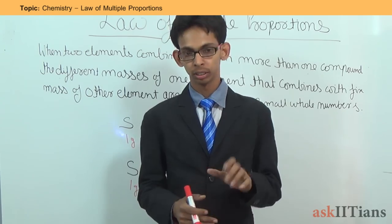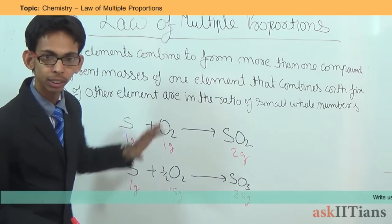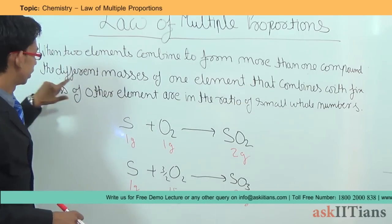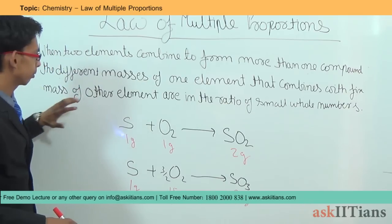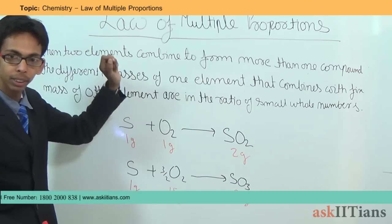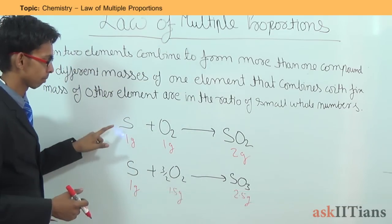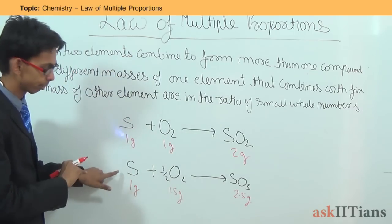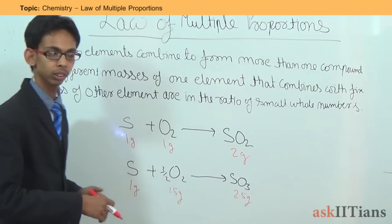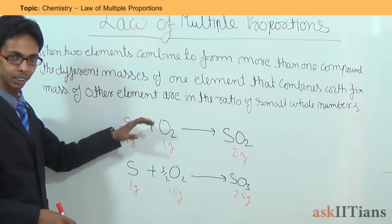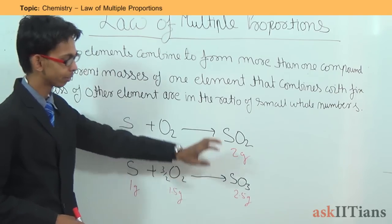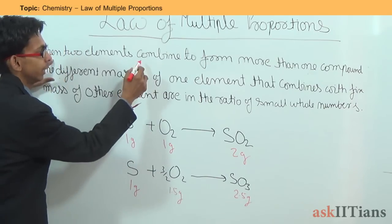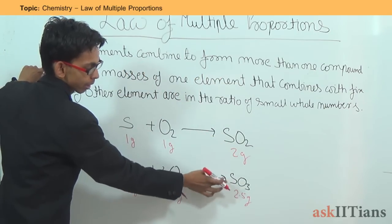The law of multiple proportions states that when two elements combine to form more than one compound, the different masses of one element that combine with the fixed mass of the other element are in the ratio of small whole numbers. For example, sulfur reacts with oxygen to form sulfur dioxide, and the same elements react to form sulfur trioxide — two different compounds formed by the same two elements.